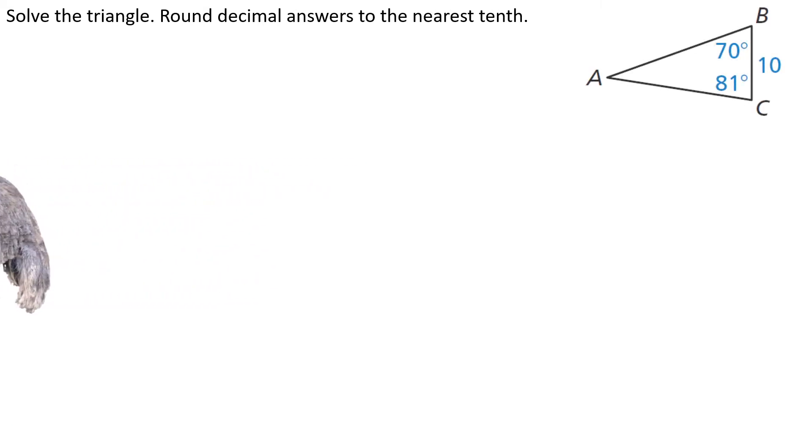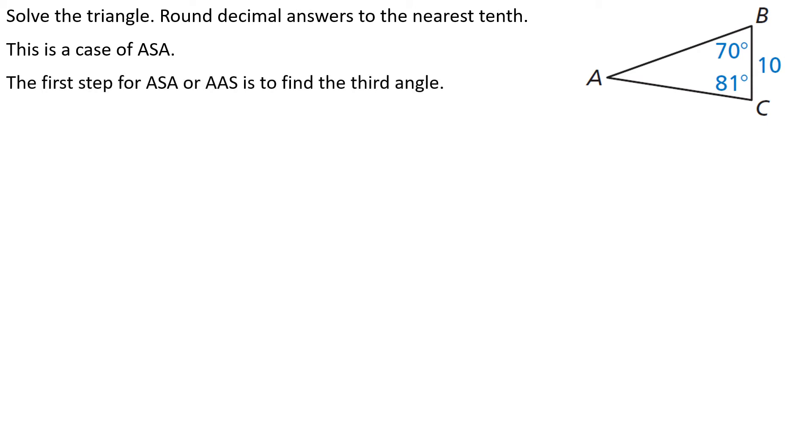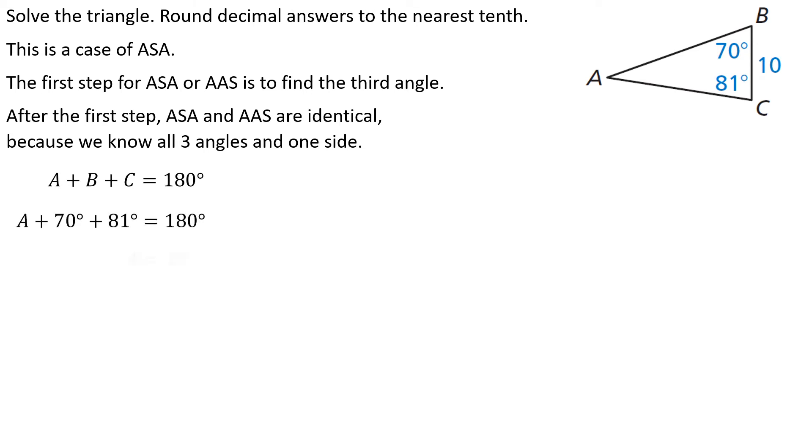Okay, so what should we find first? Hey, we know two angles. All right, this is an angle, side, angle. If we know two angles, we really know all three angles, don't we? All right, let's add them up. Figure out that the missing angle has to be 29 degrees.